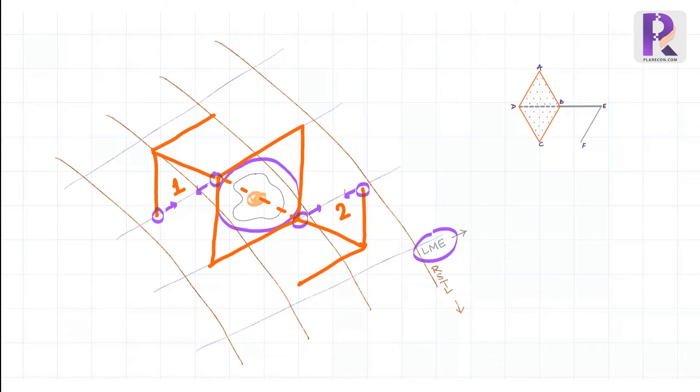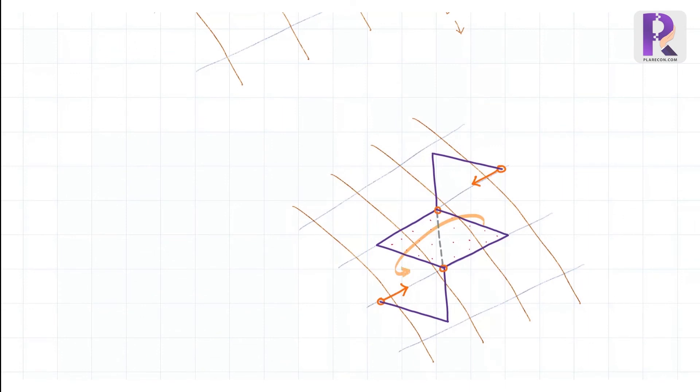In case the quadrant or position of the other two flap options is more favorable, we may flip horizontally the rhombic defect orientation to achieve the same. Now, let's look into the advantages of Limburg Flap.